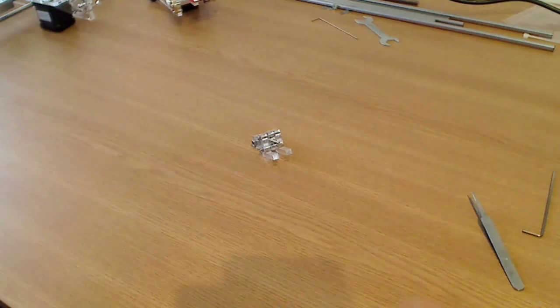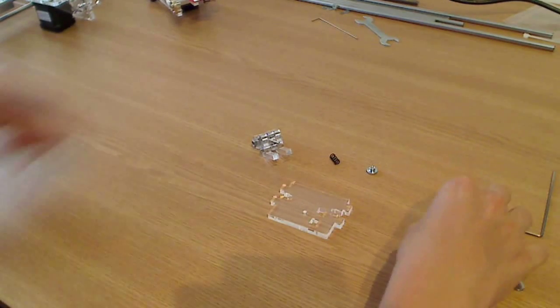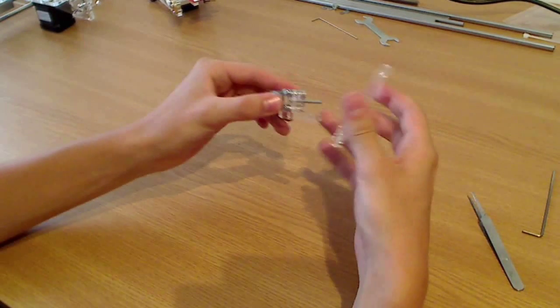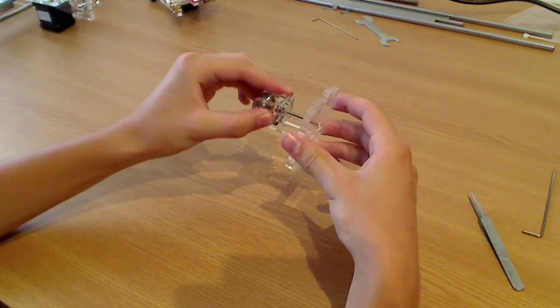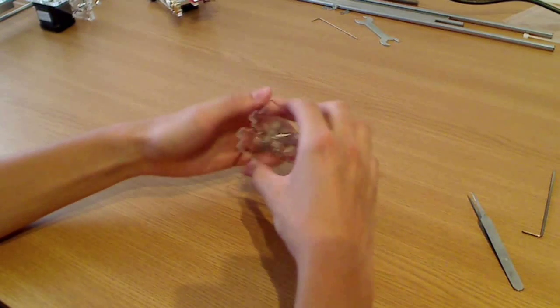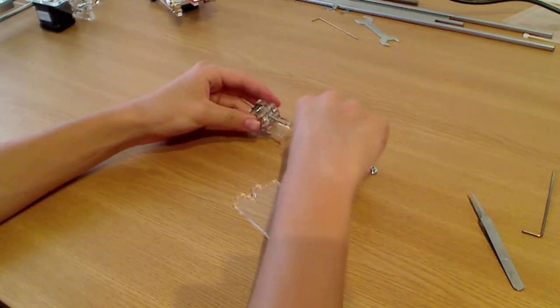Now we will take a black spring and a flange nut, and this acrylic part right here. We will mount them in place. Actually we must put this one first.